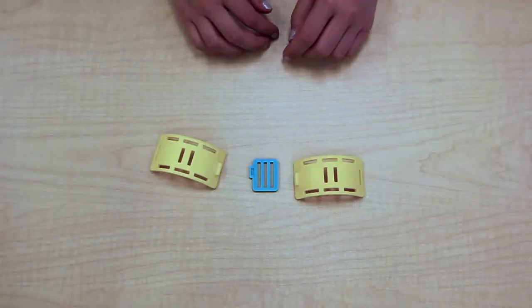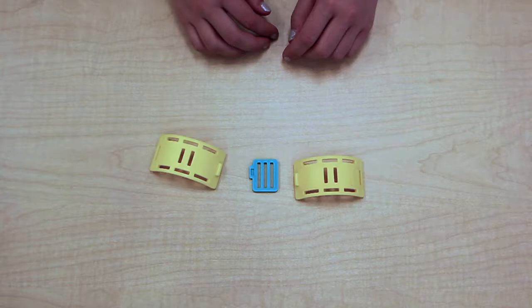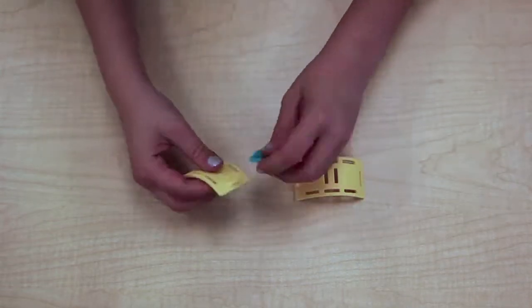Now we're going to make the handle of our basket. Take two yellow pieces and a piece with the tab towards the edge and snap them together like so.